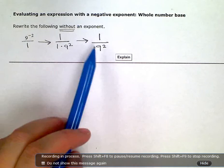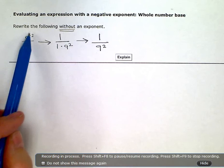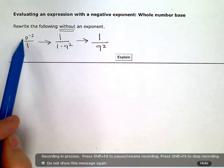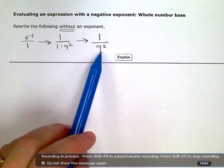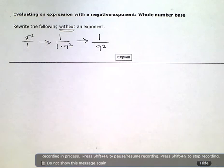So they kind of just flipped. So the 9 to the negative 2 means I want to be 9 to the 2, exponent 2, but I want to be in the other neighborhood, on the other side of the line. So I just moved it down, and then I can drop the negative on the exponent.